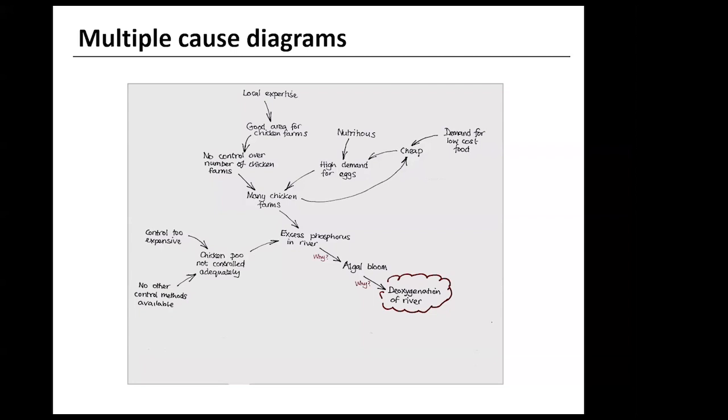Let's go back to the amount of phosphate going into the river. Another reason for this is that the discharge of chicken excrement doesn't seem to be controlled adequately. Why is this? Maybe it's because control is too expensive. Or there are no other control methods available.